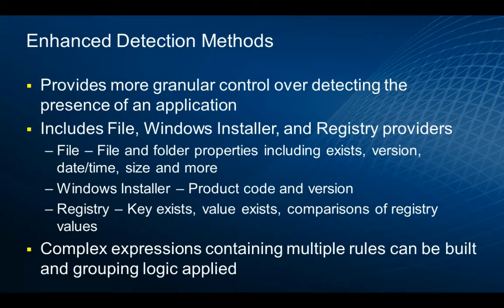The file value could be file and folder properties — whether they exist or not, versioning, date timestamps, or additional directory structure data. From a Windows Installer perspective, we look for things like MSI codes, products, and version information. At the registry level, we look for keys existing or not, entire hives, the values of keys inside hives, and comparisons of registry values across different application versions.